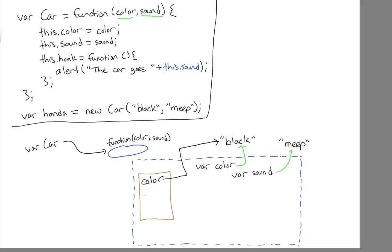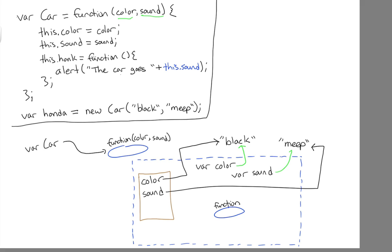Sound is the same concept. Lastly we have a third assignment — the right side is a function, so let's create a function that represents this function right here. That is the right side. The left side is this.honk, so that is the same concept as the other ones — we will make that point to our function.